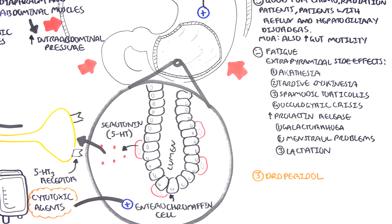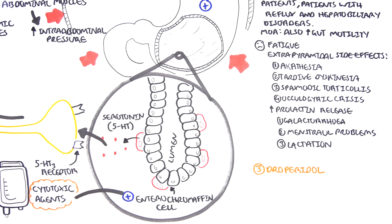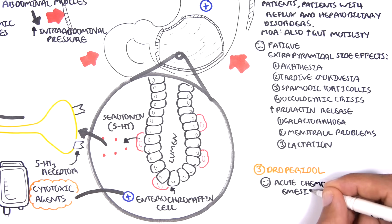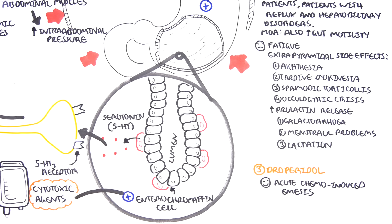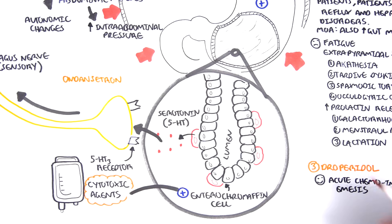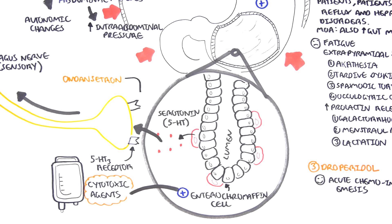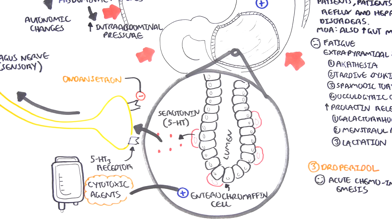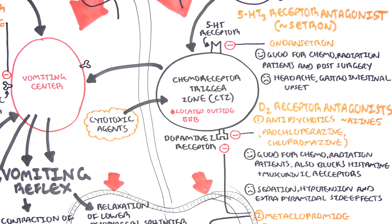Droperidol is another dopamine 2 receptor antagonist and antipsychotic, good for acute chemotherapy-induced vomiting and post-operative nausea and vomiting. Focusing on the stomach area, the 5-HT3 receptor antagonists can also work locally in the gut because there are serotonin receptors on sensory nerve fibers there. For example, ondansetron can work locally in the gut and is often used in pregnancy for bad nausea and vomiting, although it is not recommended in the first trimester, and there is some conflicting evidence.